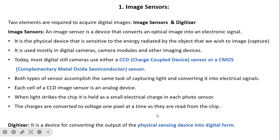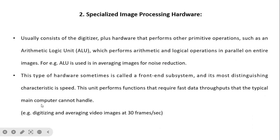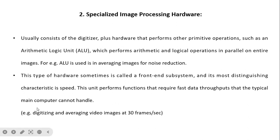The digitizer converts the electrical signal into a digital signal. Specialized image processing hardware usually consists of this digitizer plus hardware that performs other primitive operations, such as an arithmetic logic unit (ALU) which performs arithmetic and logical operations in parallel on an entire image — for example, used in averaging images for noise reduction. This type of hardware is sometimes called a front-end subsystem, and its most distinguished characteristic is speed. It performs functions that require fast data throughput that a typical main computer cannot handle.